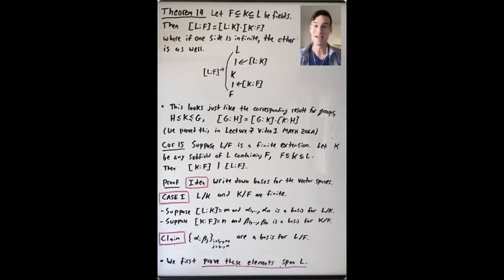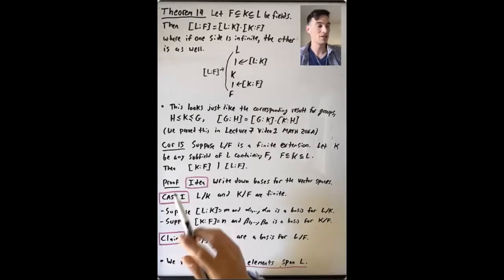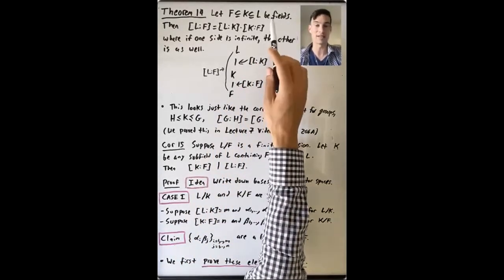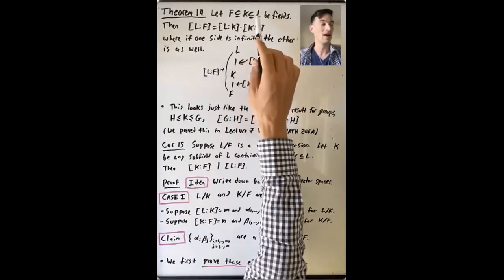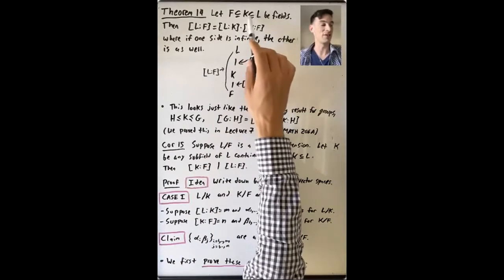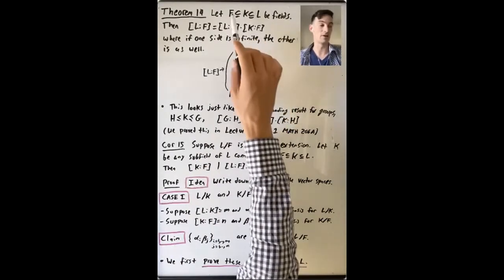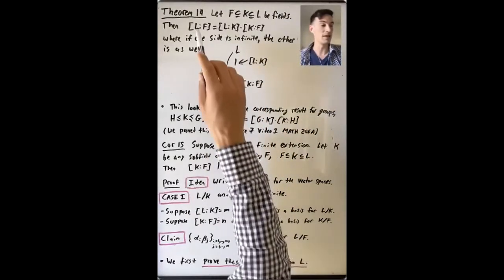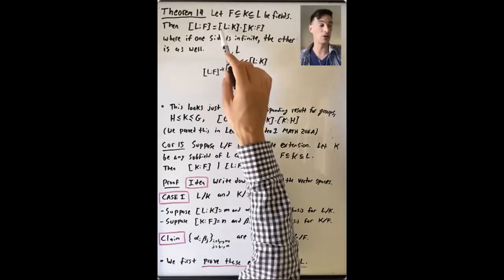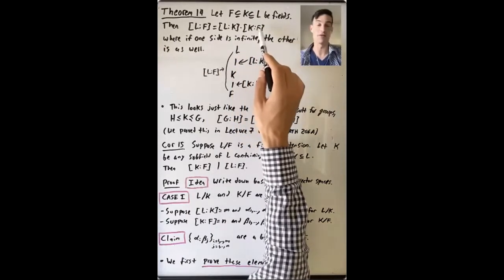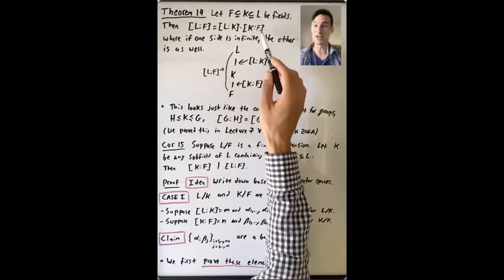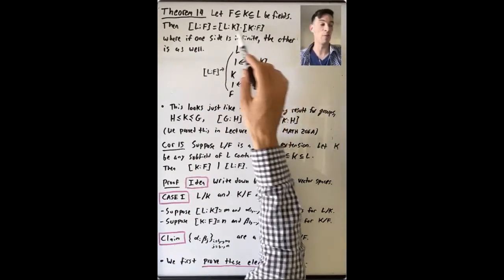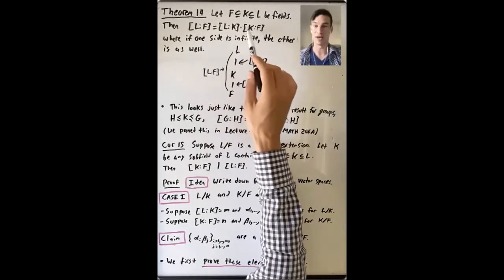The goal of this video is to prove that degrees of field extensions are multiplicative, and then to see some nice quick consequences of how to use that fact. Suppose we have fields F, K, and L, where L is an extension of K and K is an extension of F, so L is also an extension of F. Then the degree of L over F is the product of the degree of L over K and the degree of K over F, where if these are all positive integers it's clear what this means, but if one side is infinite, then the other side is infinite as well.